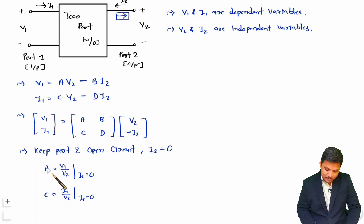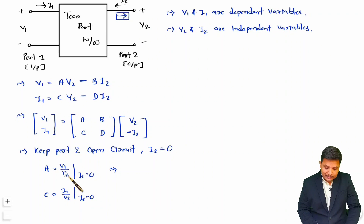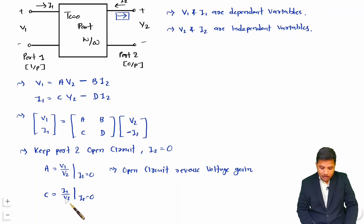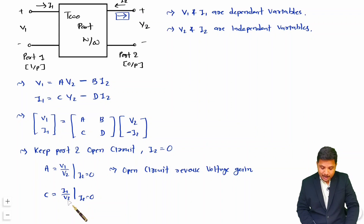Now let us understand the names of A and C. A is a ratio of voltages — it is V1/V2, meaning input voltage over output voltage, so it is a reverse voltage gain. Since it is measured at open circuit, A is called the open-circuit reverse voltage gain. C is a ratio of current to voltage, meaning it is admittance. Since it is input current divided by output voltage, it is reverse transfer admittance — so C is the open-circuit reverse transfer admittance.